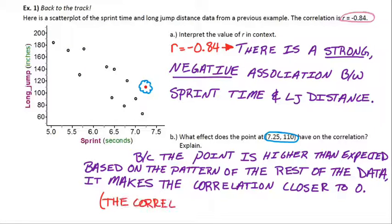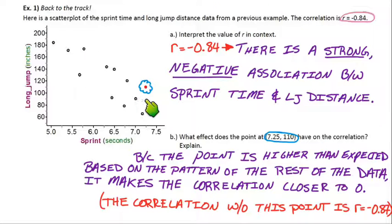Actually, if you took it out, the correlation without this point is actually negative 0.87. So it improves. It becomes stronger without that point, which should make sense. This point's a little bit off the trend. Without that point, if I cover it up here, the correlation would be negative 0.87. With that point, it makes it a little weaker. It's negative 0.84.